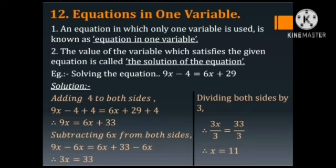Therefore, 9x is equal to 6x plus 33. Subtracting 6x from both sides: 9x minus 6x is equal to 6x plus 33 minus 6x. So 3x is equal to 33. Dividing both sides by 3: 3x upon 3 is equal to 33 upon 3. Therefore, x is equal to 11 is the answer.